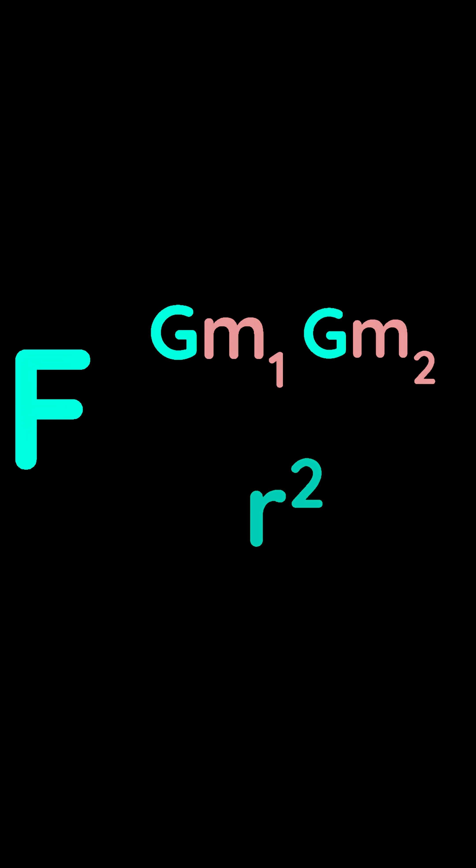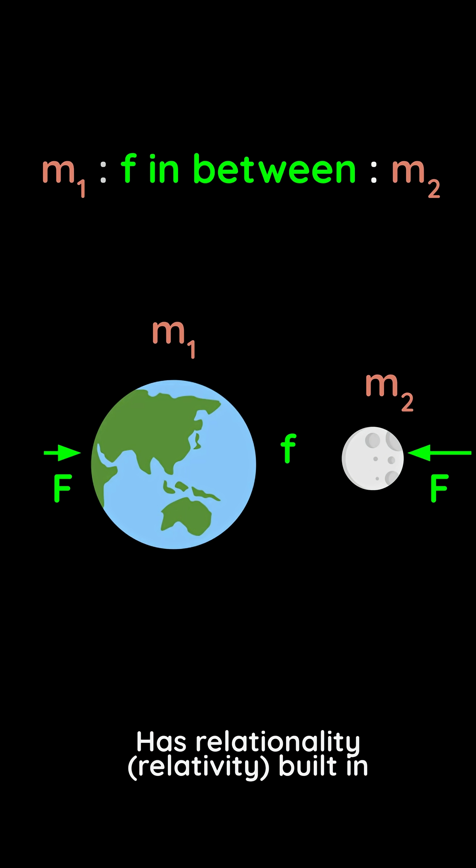To use the language of Cartesian mechanics, we say that F is the effect of the relational action of the two masses.